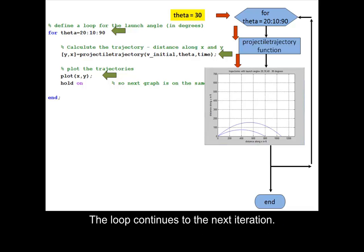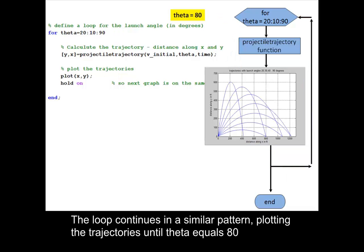The loop continues to the next iteration. The loop continues in a similar pattern, plotting the trajectories until theta equals 80.